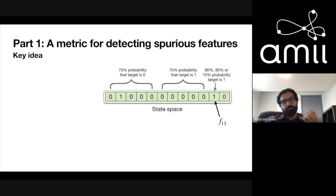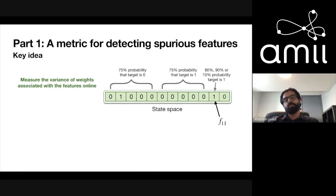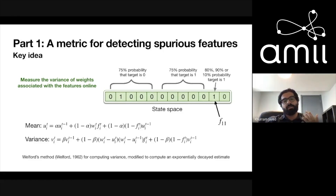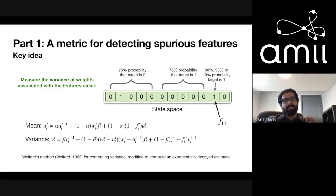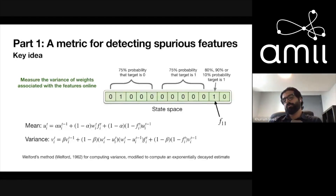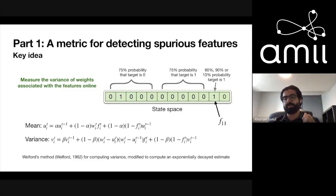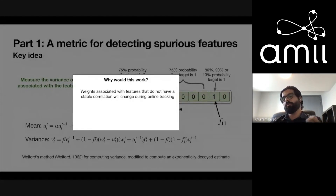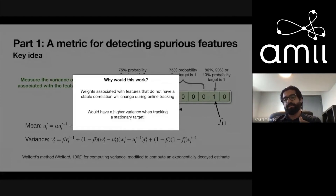Coming up with an online method to detect these features is not that hard. The key idea is to measure the variance of the weights associated with the features, which we can compute online. We compute an online estimate of the mean of the weights, and as the agent is tracking the weights changing, we use this mean to compute the variance online. The weight associated with an unstable feature will change over time during online tracking and can't converge, so we'd expect that weight to have higher variance.